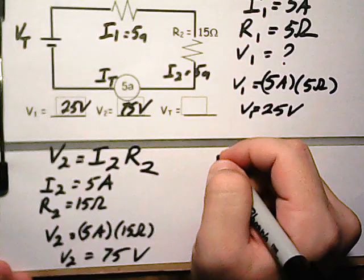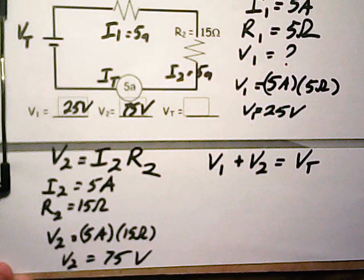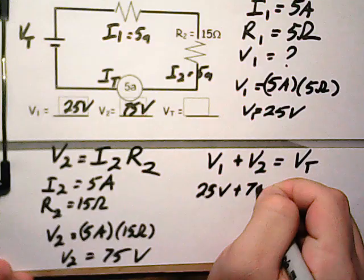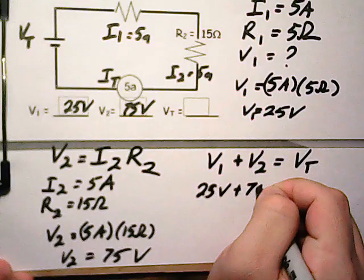Okay. To find our last part, V1 plus V2 is equal to our total V. So 25 volts plus 75 volts is equal to our total voltage. So if we rearrange it, Vt, the total is 25 plus 75, which is 100. So we get 100 volts.